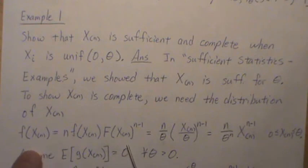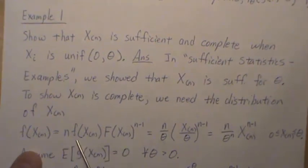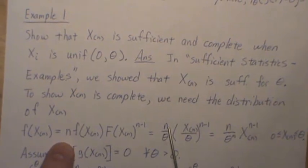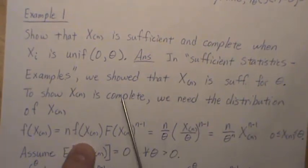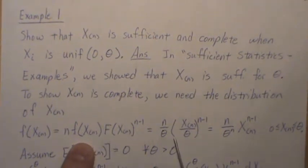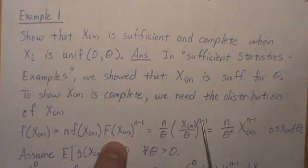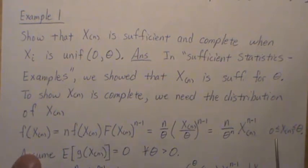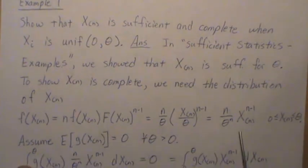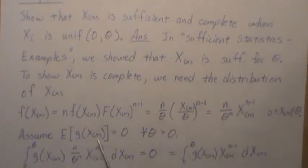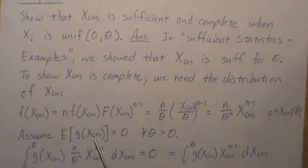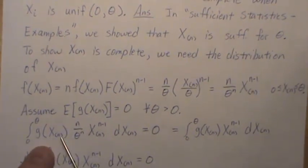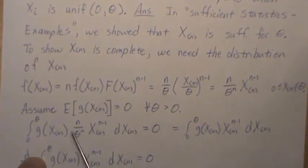I have a playlist called 'Order Statistics' where we look at this, but here we're just going to assume you know the distribution for the nth order statistic. The density f of X_(n) is n times (1/theta) times (x/theta)^(n-1), for x_n between zero and theta. We then assume that the expected value of a function g of the nth order statistic equals zero for all theta, which means we take g times the density and integrate over all possible values, set equal to zero.